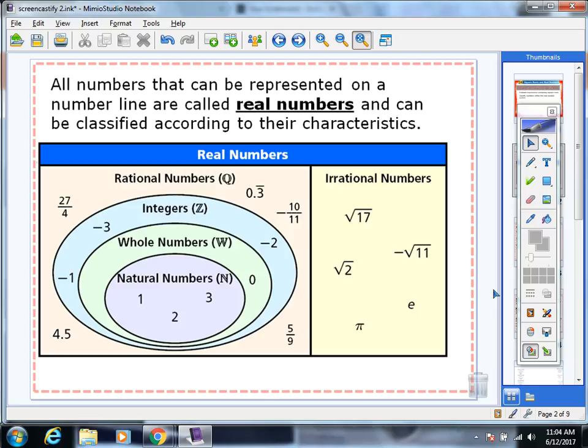All numbers that can be represented on a number line are called real numbers and can be classified according to their characteristics. Real numbers include rational numbers and irrational numbers.